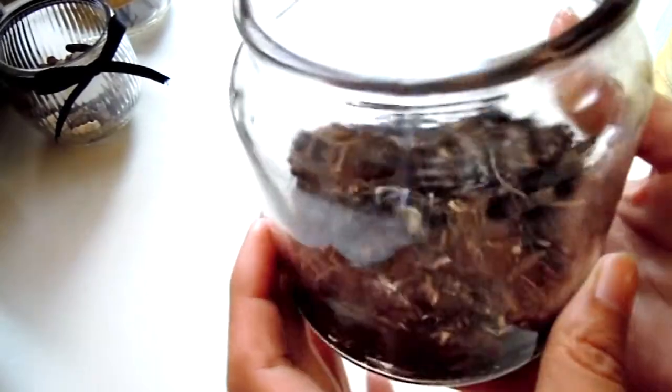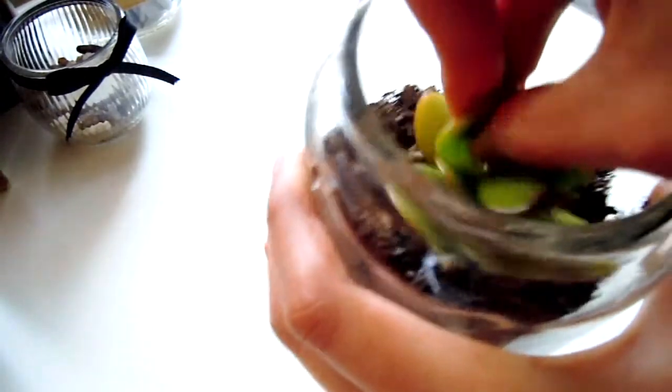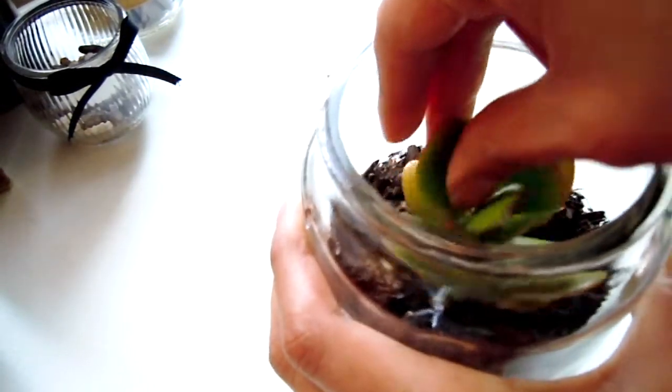First take your jar and fill it with some soil. Then take your succulent and place it inside the soil securely and firmly, making sure that it doesn't wiggle around in there.